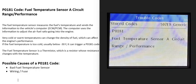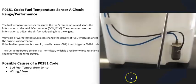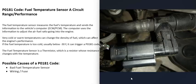Today I'm talking about a P0181 code — what it is and how you go about fixing it. The P0181 code is a fuel temperature sensor circuit range/performance code. There's a fuel temperature sensor that reports back to the computer what the temperature of the fuel is. Since the density of fuel can change depending on temperature, the computer uses this information to adjust the air-fuel ratio mixture going into the cylinders, which can really fine-tune the engine when it's running.